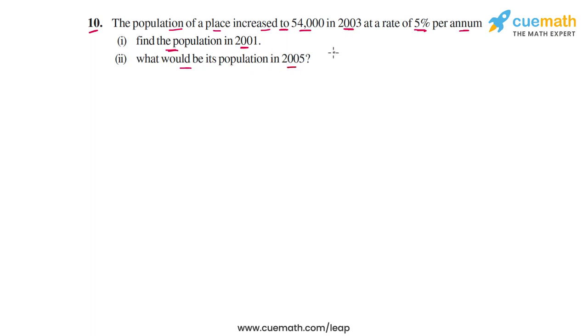So the population is growing. In 2001, the population was a certain amount we have to find. In 2003, we know the population, that's 54,000. And using this, we also have to find what the population will be in 2005.